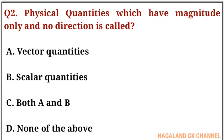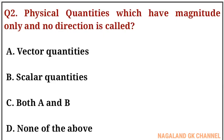Question number two: physical quantities which have magnitude only and no direction are called what? The correct answer is option number B, that is scalar quantities.